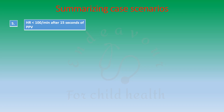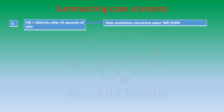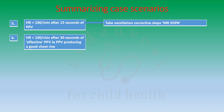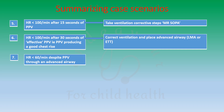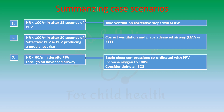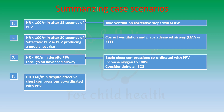Fifth, if the heart rate is less than 100 beats per minute after 15 seconds of PPV, take ventilation corrective steps — MR SOPA. Sixth, if the heart rate is less than 100 beats per minute after 30 seconds of effective PPV producing good chest rise, correct ventilation and place an advanced airway — laryngeal mask airway or endotracheal tube. Seventh, if the heart rate is less than 60 beats per minute despite PPV through an advanced airway, begin chest compressions coordinated with positive pressure breaths, increase oxygen to 100%, and consider ECG. Eighth, if the heart rate is still less than 60 beats per minute despite effective chest compressions and PPV, administer IV epinephrine.